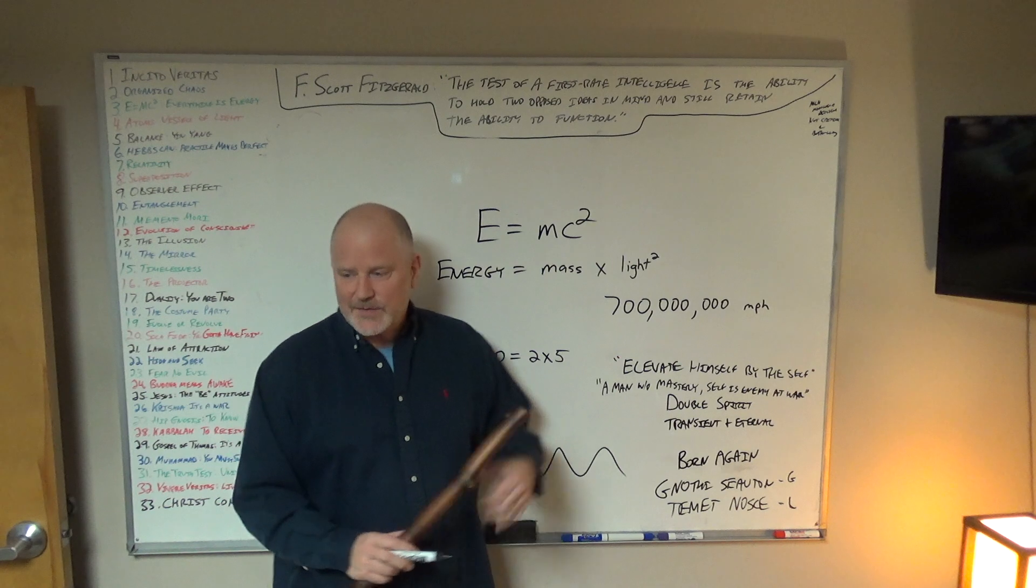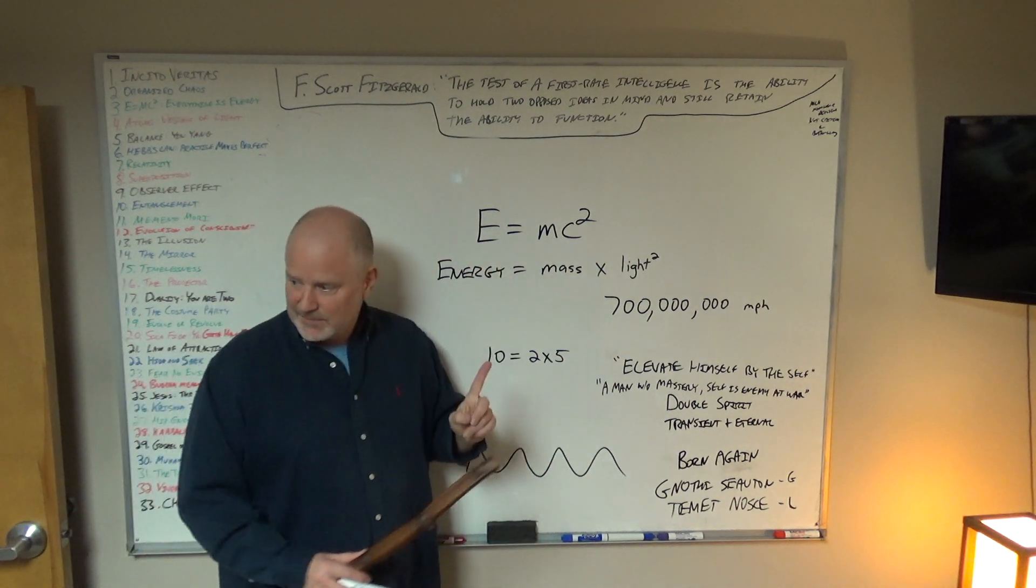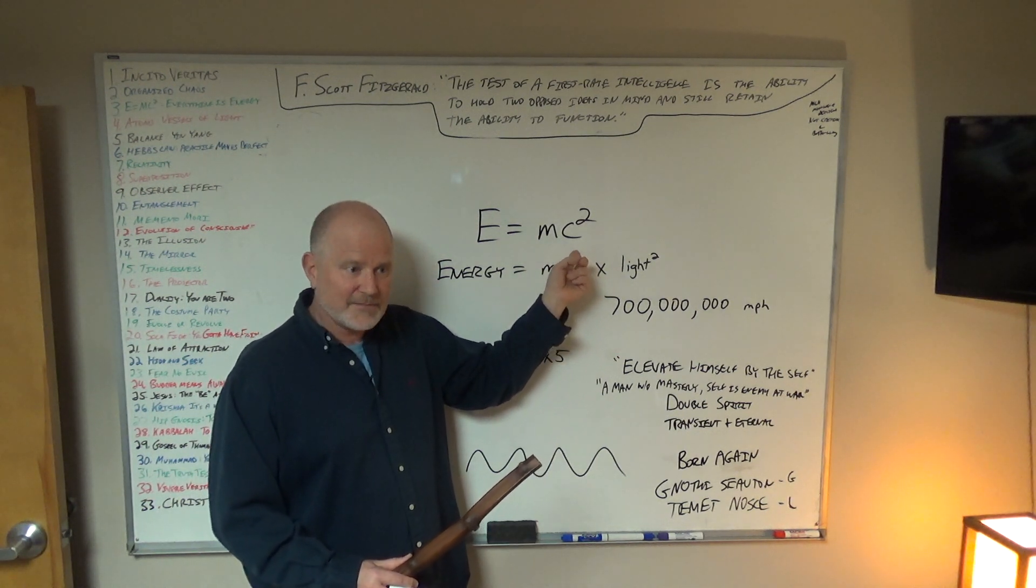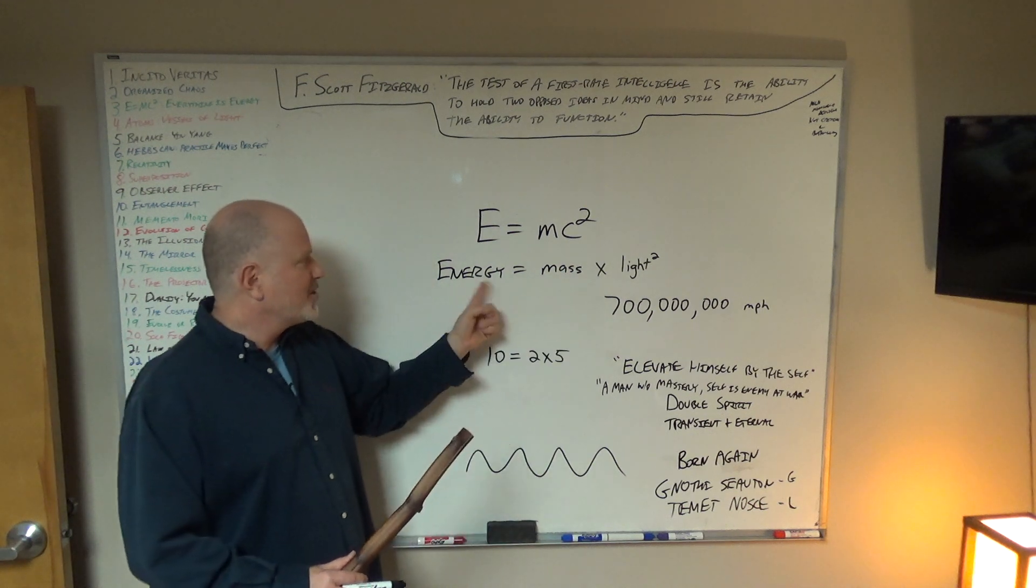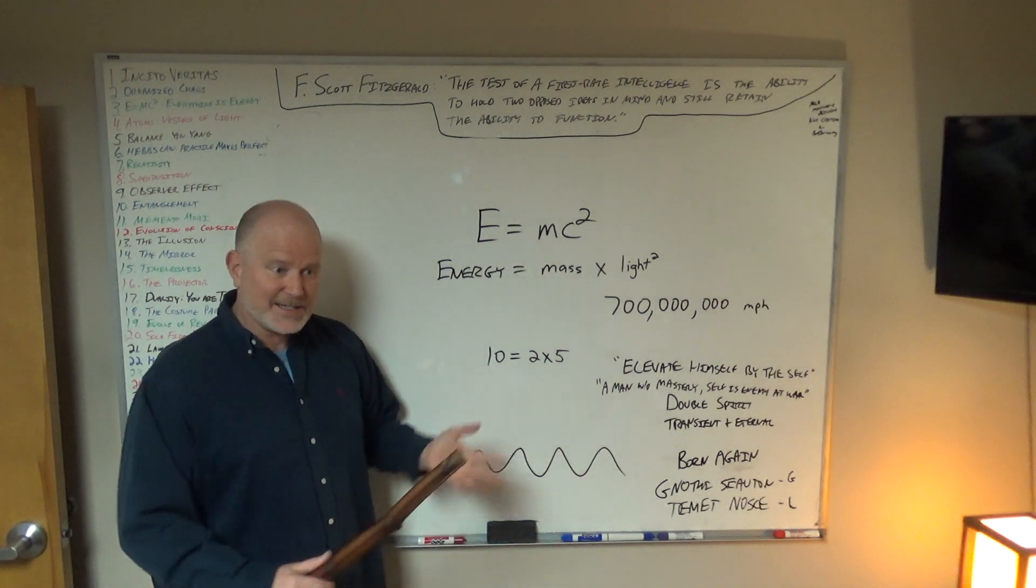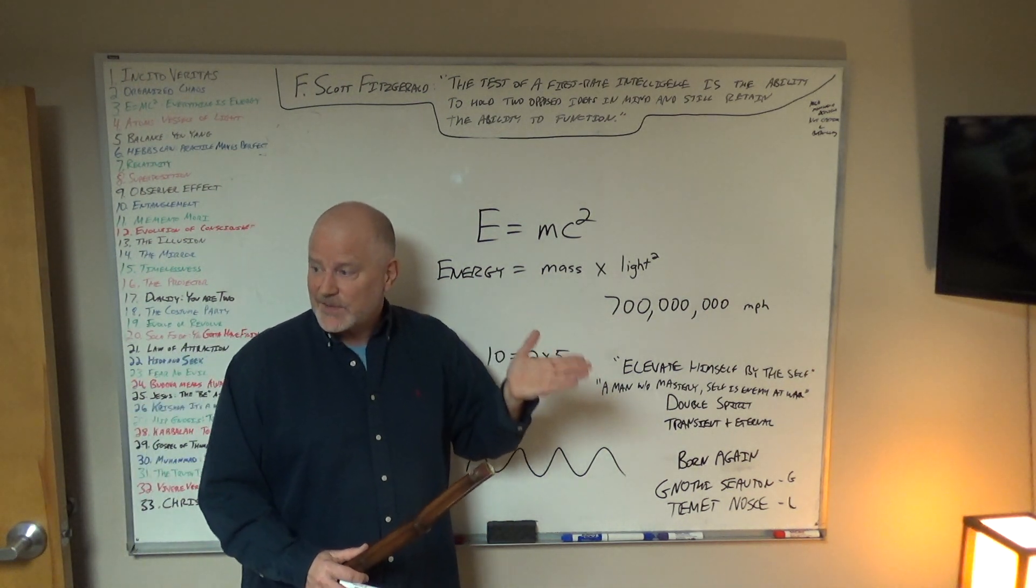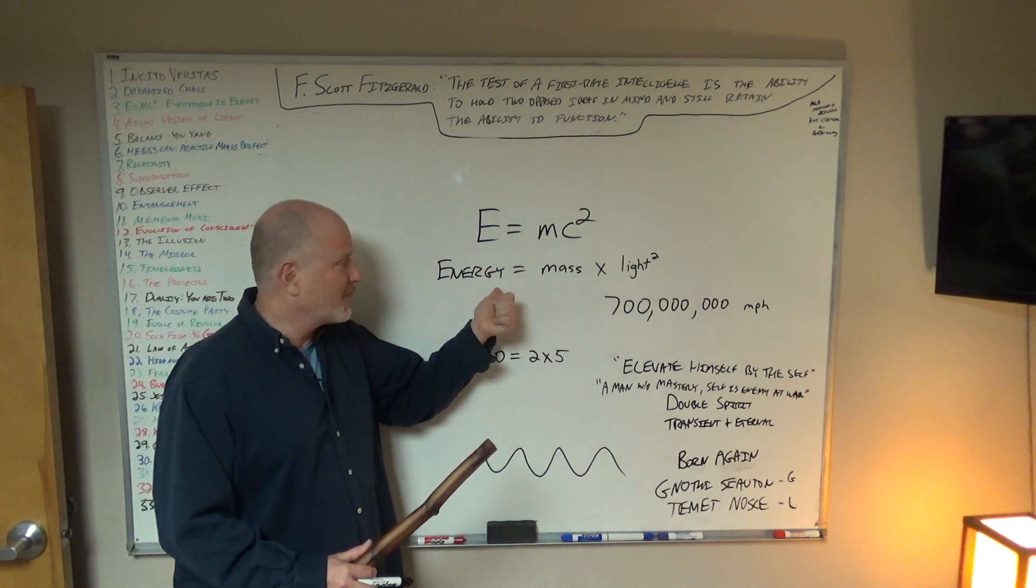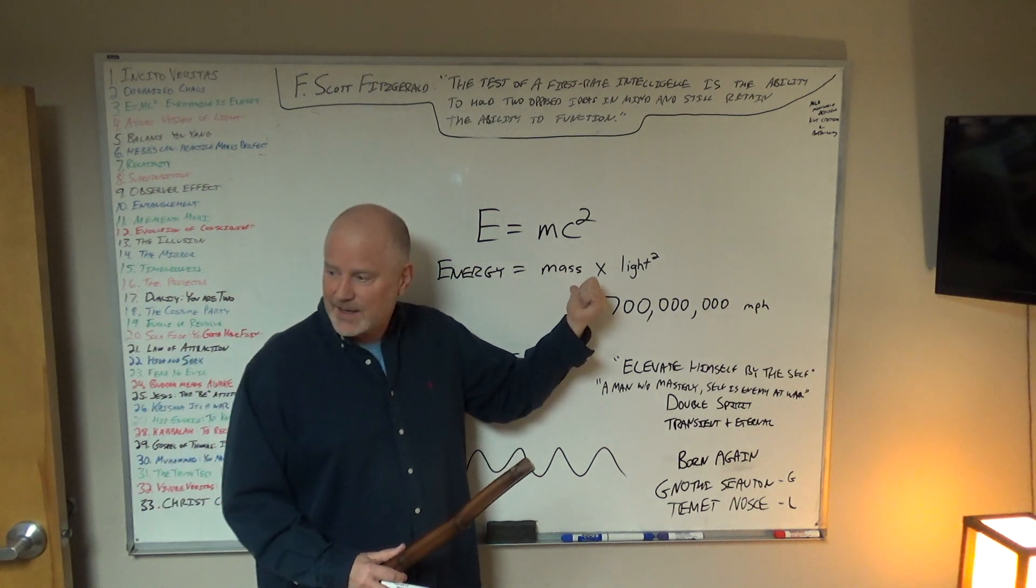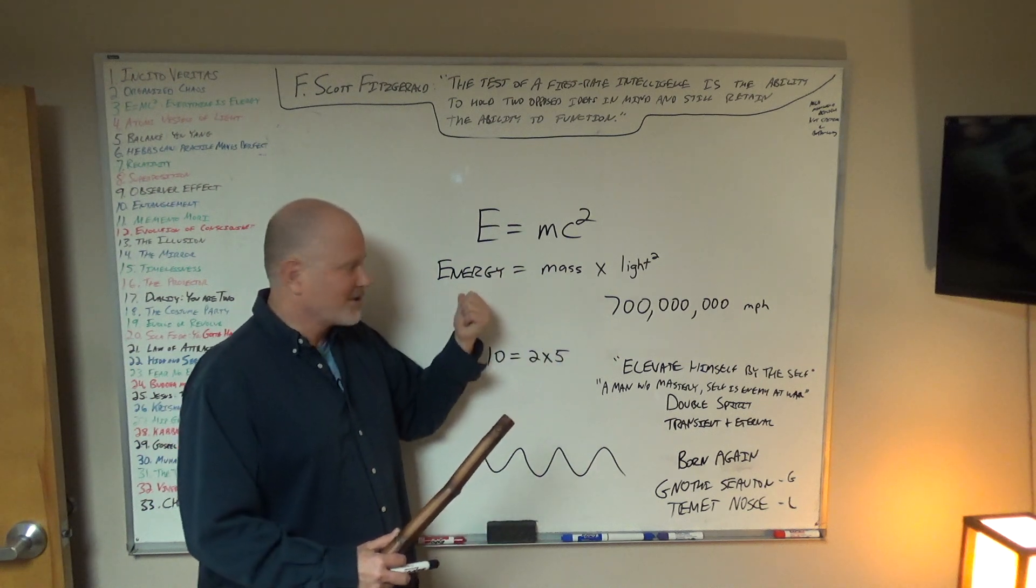So most everybody I know has heard of E equals mc squared, and it's really simple. Most people understand that the E is energy, and the M is mass, and the c squared is a constant, which is the speed of light squared. So we've got energy equaling mass times the speed of light squared. Our bodies have mass, and yet the mass is actually energy.